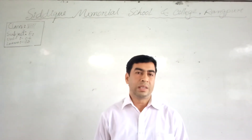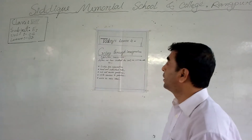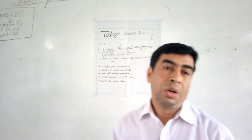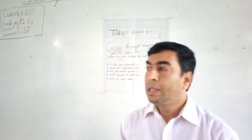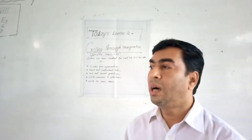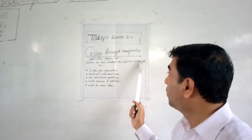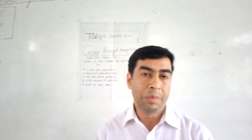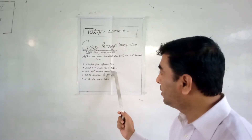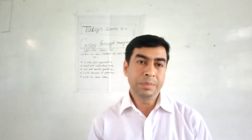Think — what will be our lesson? Today's lesson is Going Through Immigration. What is the meaning of Going Through Immigration? The outcomes of this lesson are: listen for information, read and understand text, ask and answer questions, write answers to questions, and write the main ideas.